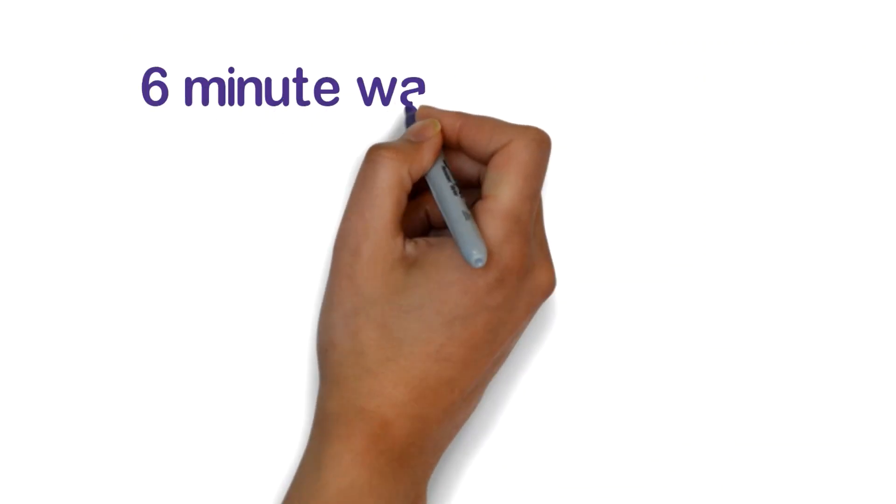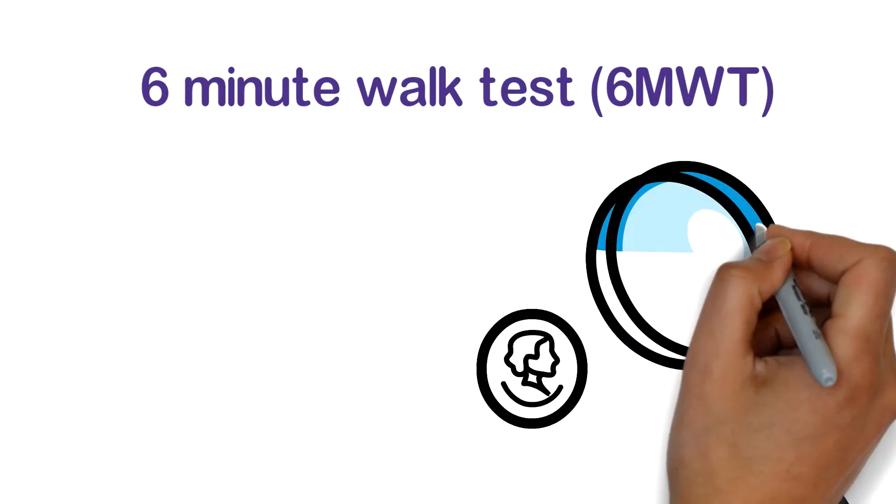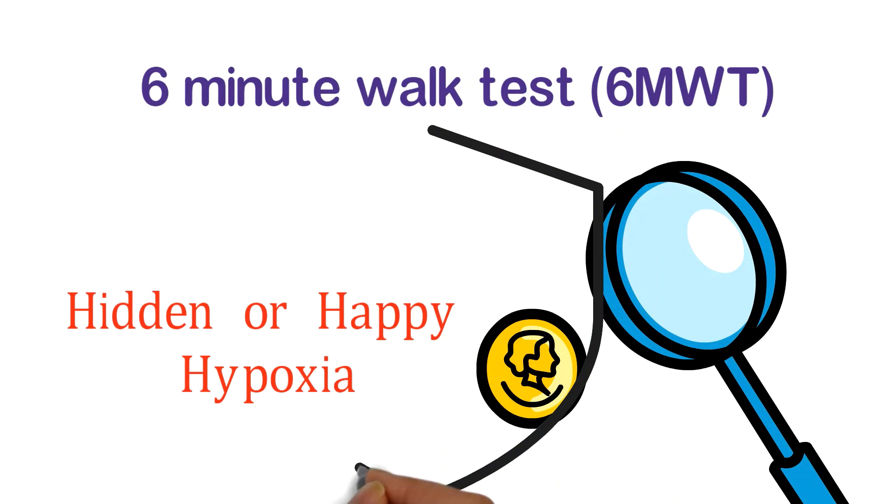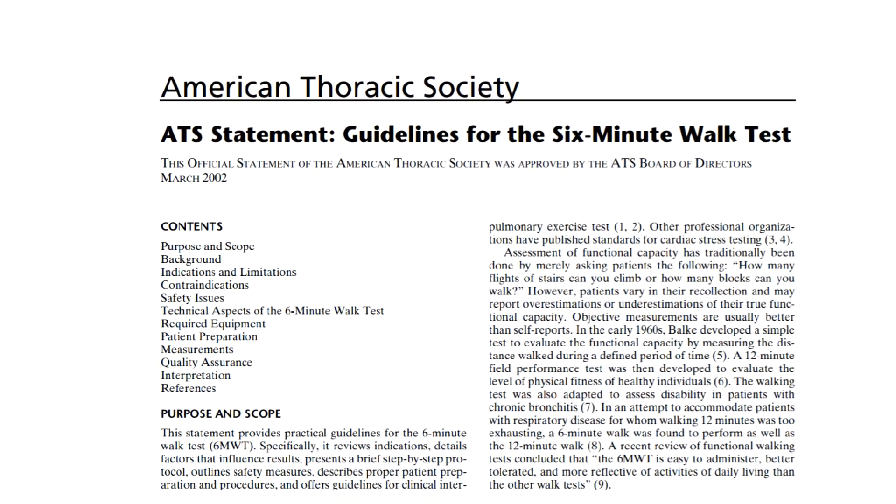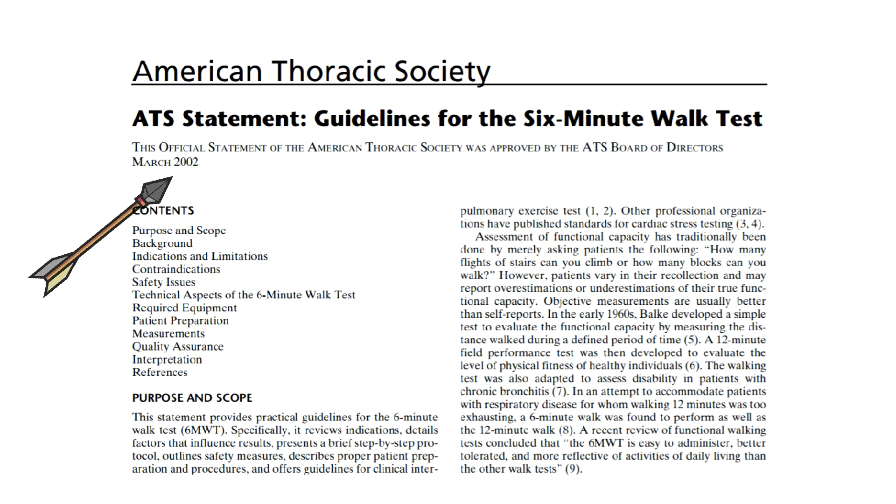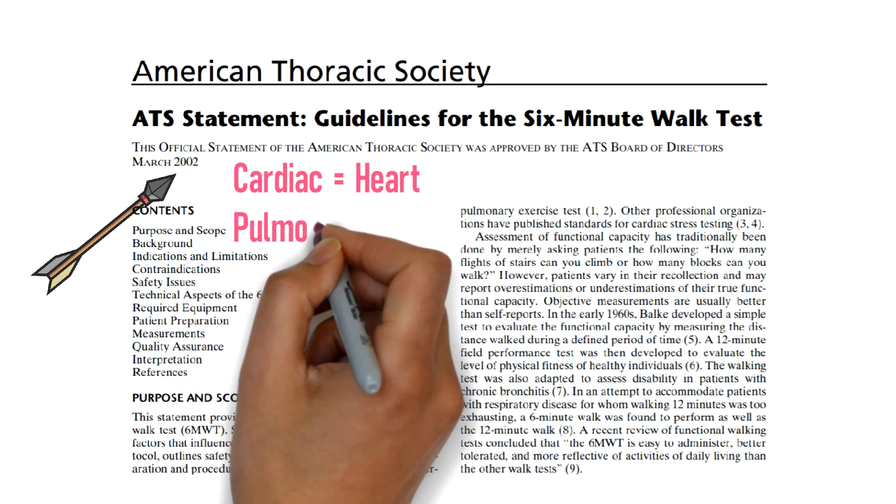The 6-minute walk test is a simple and effective tool to assess hidden or happy hypoxia, which can help in early identification of high-risk patients. The 6-minute walk test was introduced in 2002 for patients with moderate to severe cardiac or pulmonary disease.